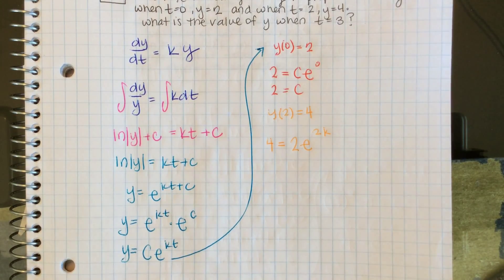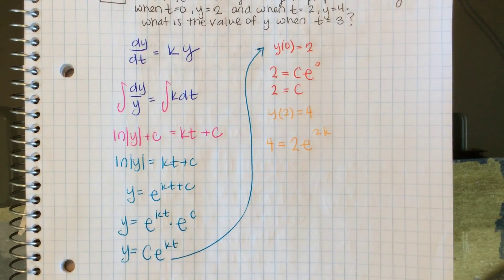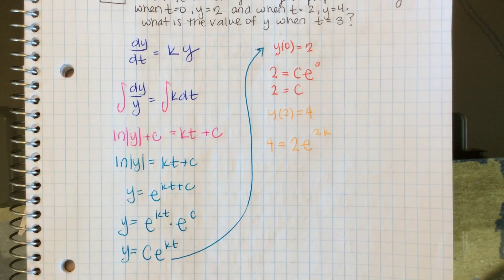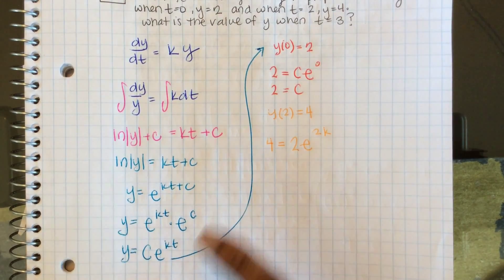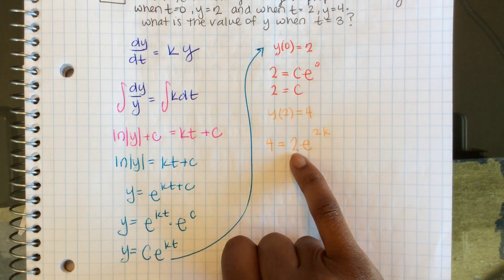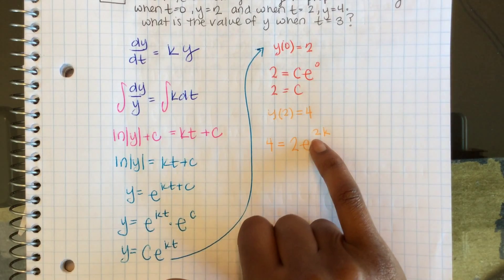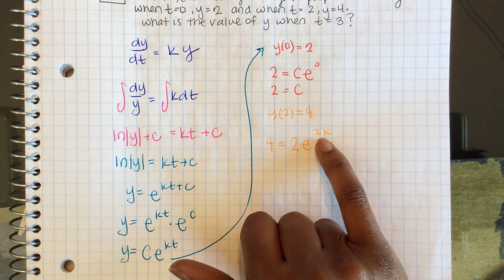Now I can solve this equation for k, my proportional constant. Notice, I plugged in 4 for y, 2 for C, and 2 for t.